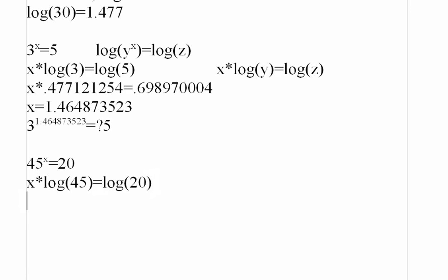And then we just need to take those two logarithms. The log of 45, 1.6532. So x times 1.6532. I'm not going to use the ridiculous number of decimal places that I used last time. And on the right hand side, we have the log of 20. So 20, the log of 20 is 1.30103, something like that.